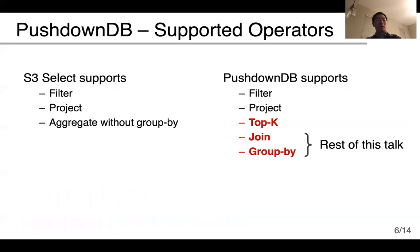The current version of S3 Select supports only filtering, projection, and aggregation without group-by. In PushdownDB, we use these basic operators to push down more advanced operators to the storage. PushdownDB supports TOP-K, join, and group-by aggregation. For the rest of this talk, I will briefly discuss the implementations of join and group-by.